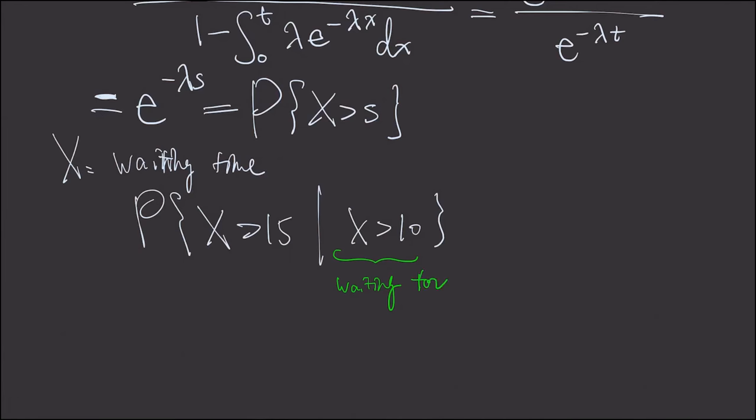This means we have been waiting for 10 minutes or more. And now the probability of, if we want to wait for 5 more minutes, this is waiting time is 15, let's say, a minute or longer. And this is the same, actually, the same as x is greater than 5.